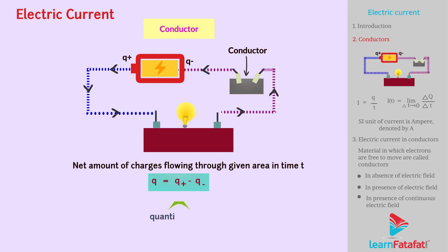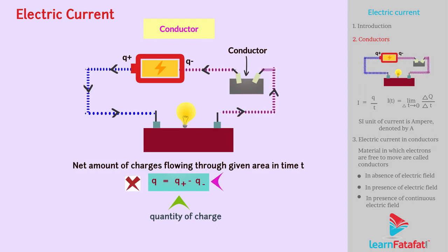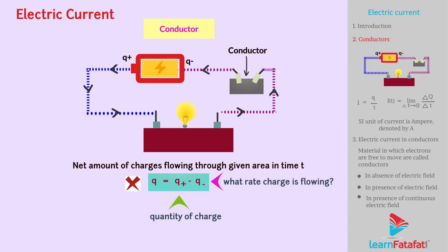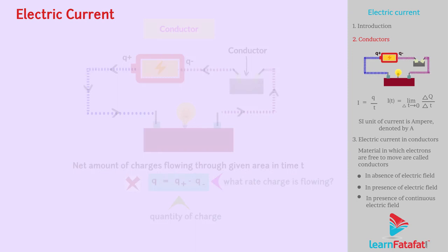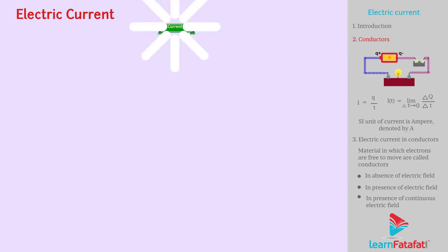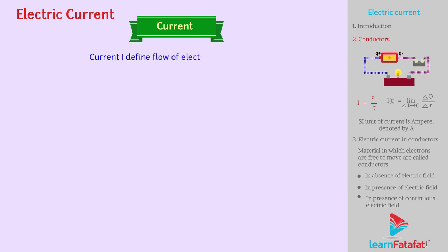Here we get the quantity of charge. However, it is not possible to get the idea of what rate charge is flowing. For that, we define a term called current. Thus, current I can be defined as the flow of electric charge with respect to time, and it is given by I equals Q by t.